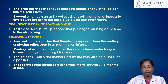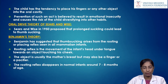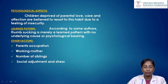The oral drive theory of Sears and Weiss, proposed in 1950, suggests that prolonged sucking can lead to thumb sucking habit. Benjamin's theory suggests that thumb sucking arises from the rooting or placing reflex seen in all mammalian infants. The rooting reflex is the movement of the infant's head and tongue towards an object touching the cheek — usually the mother's breast but may also be a finger or pacifier. This reflex disappears around seven to eight months of age.